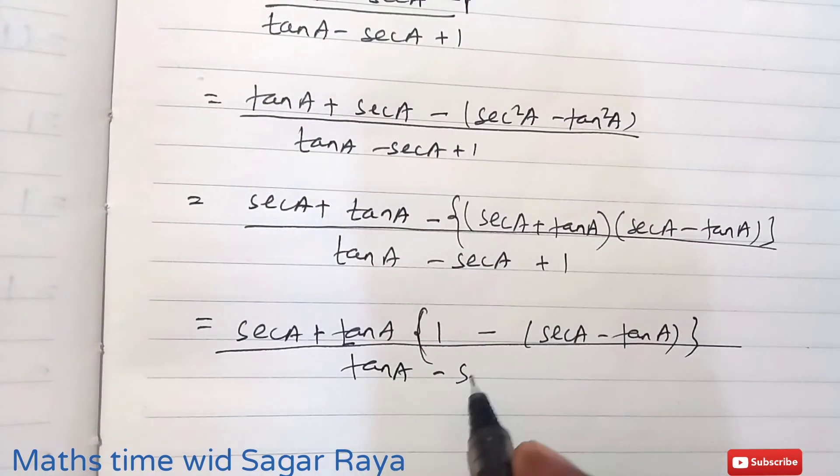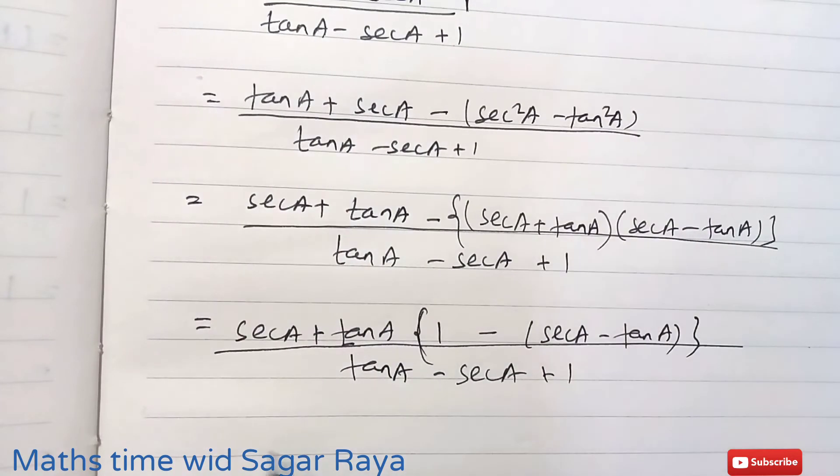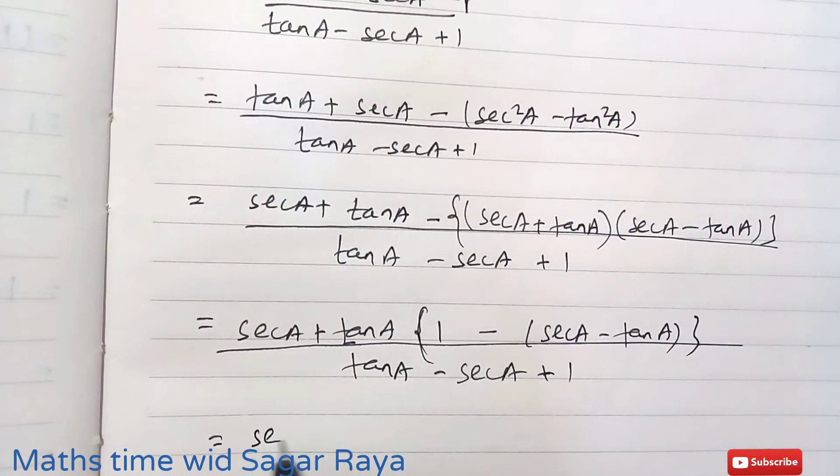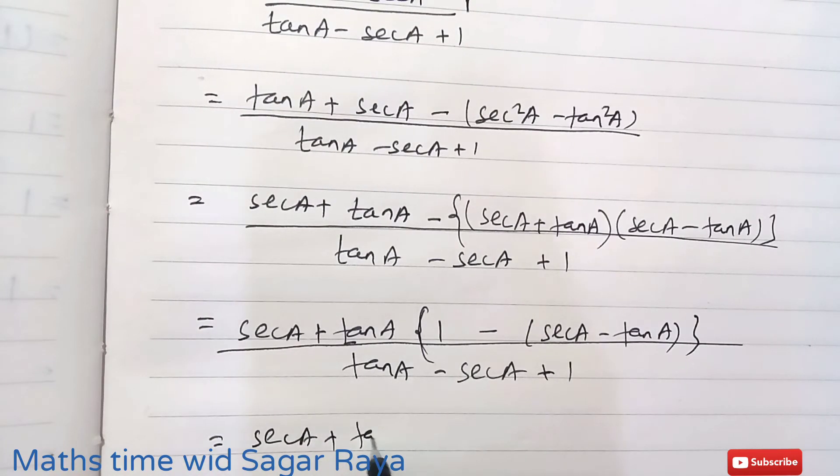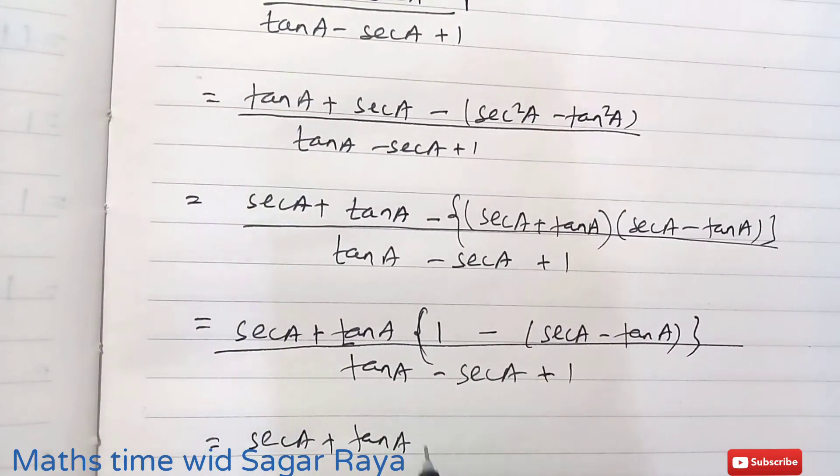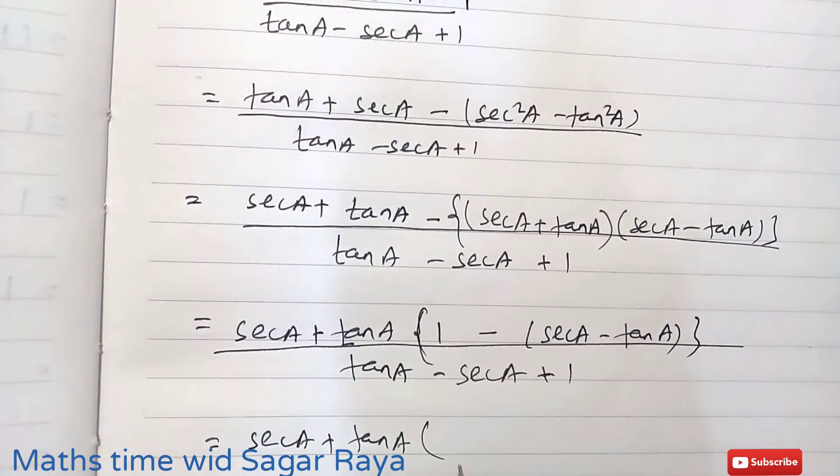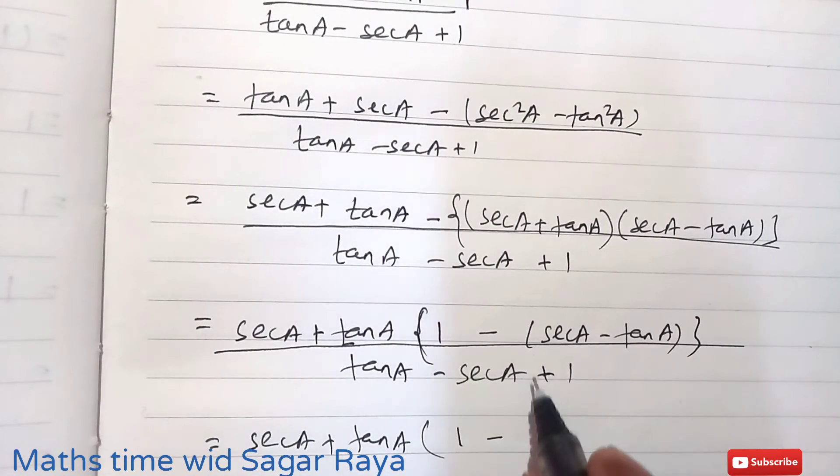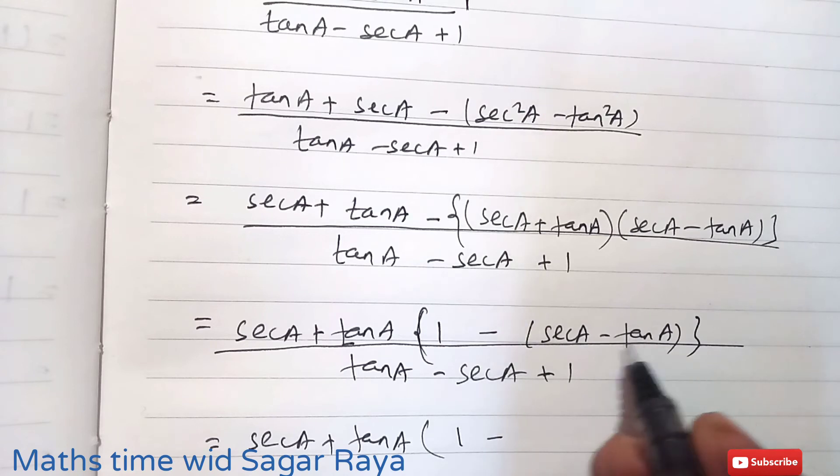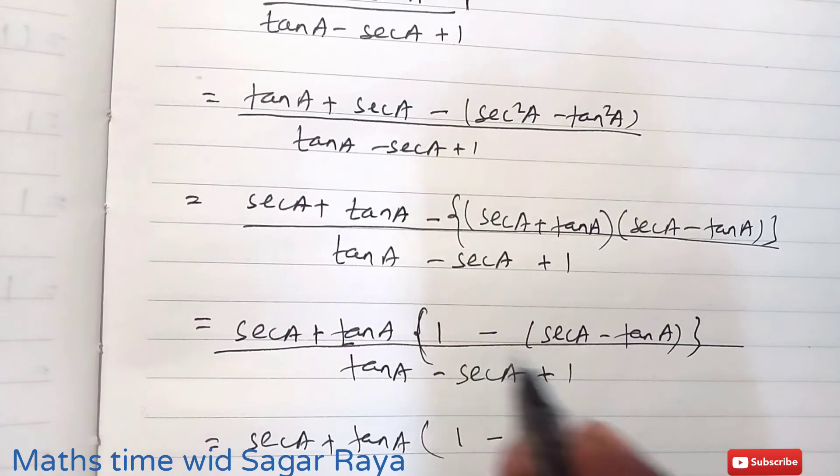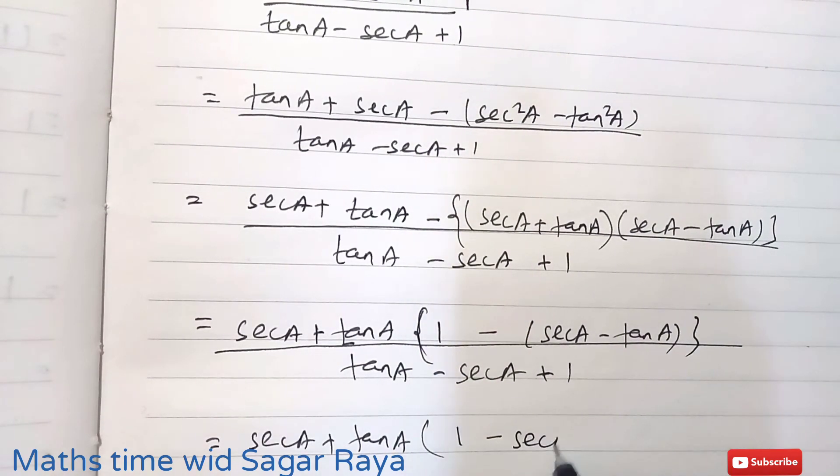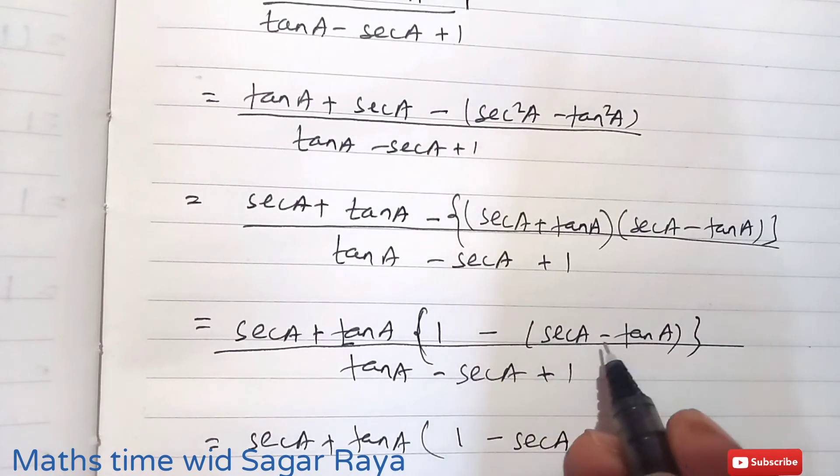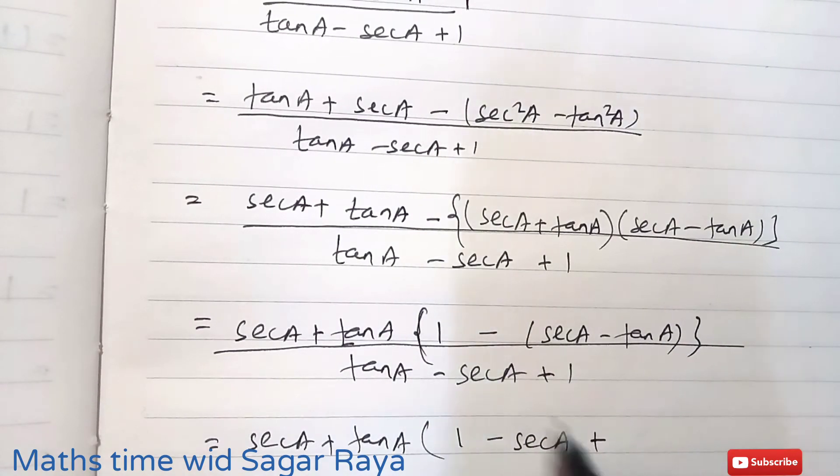Then you can write this in one bracket. Now you can just use a small bracket here: 1 - (secA - tanA). So if you just multiply this secA - tanA with -1, then -1 times secA will be -secA, and minus times -tanA becomes plus tanA.